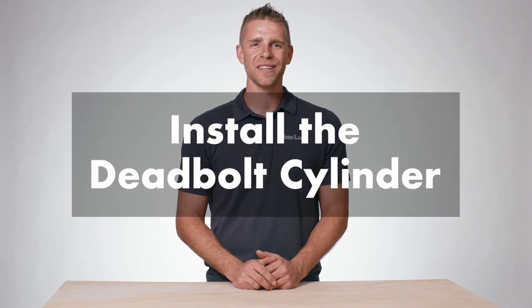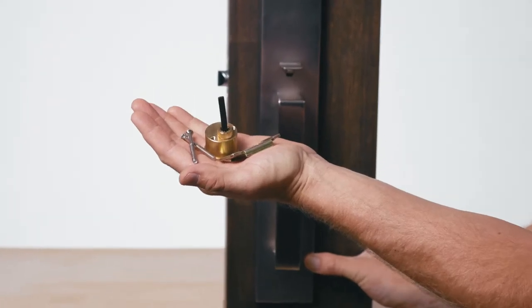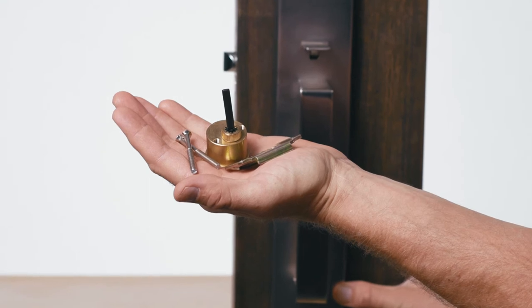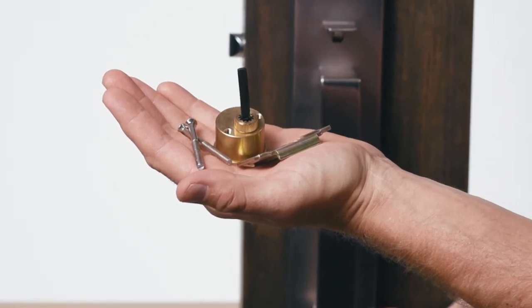Now let's install the deadbolt cylinder. First, locate the deadbolt cylinders, the two and a quarter inch deadbolt screws, and the mounting bracket.